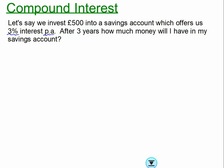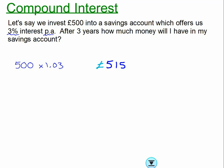People get this really wrong. They're quite happy increasing £500 by three percent, so we'd have 103 percent — times it by the percentage multiplier 1.03 — and then they simply times that by three. That is very wrong, and that is called simple interest, which we're not doing. If we work this out: 500 times 1.03 gives us £515.